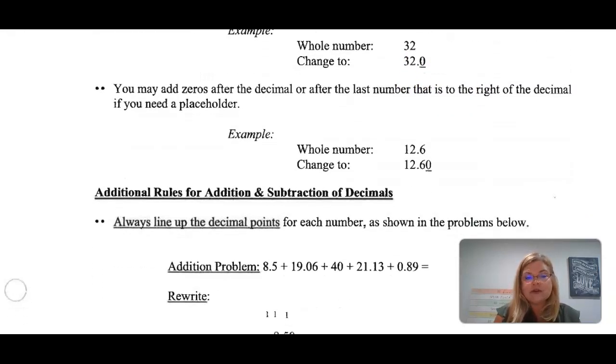You may add zeros after the decimal or after the last number that is to the right if you need to use it as a placeholder. Here's another example. The whole number is 12.6. If we say 12.60, this zero is holding a place. You are able to do that in order to be able to line things up correctly.